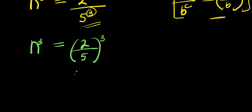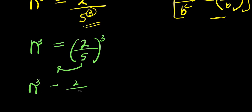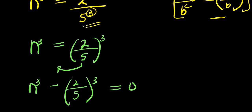Now, in order to solve this cubic equation, I move this term over here. It becomes n³ minus (2/5)³ equals 0.